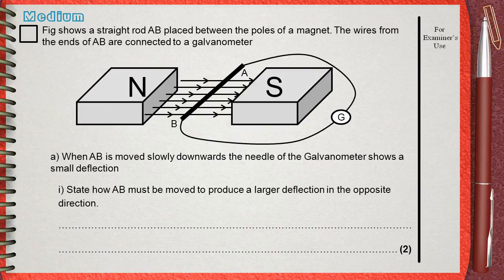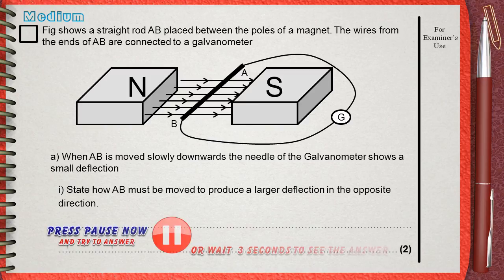The figure shows a straight rod AB placed between the poles of a magnet. The wires from the ends of AB are connected to a galvanometer. When AB is moved slowly downwards, the needle of the galvanometer shows a small deflection. State how AB must be moved to produce a larger deflection in the opposite direction.